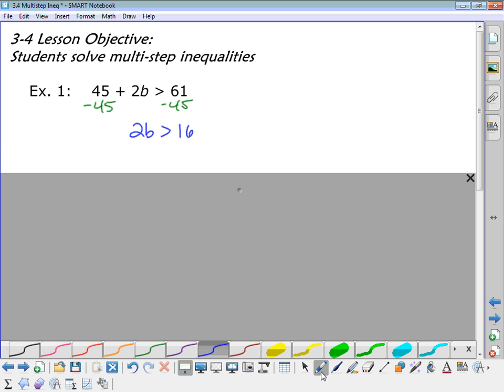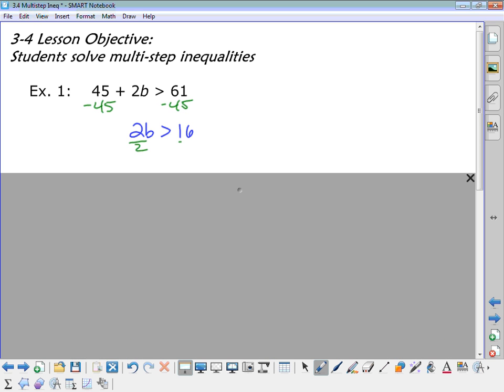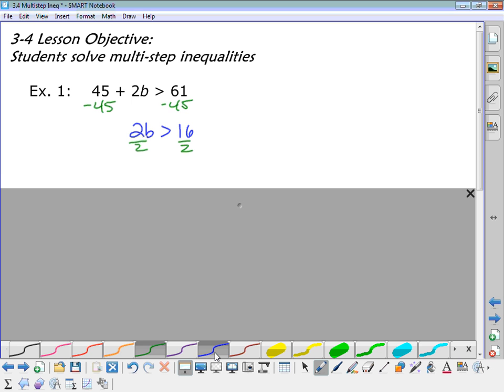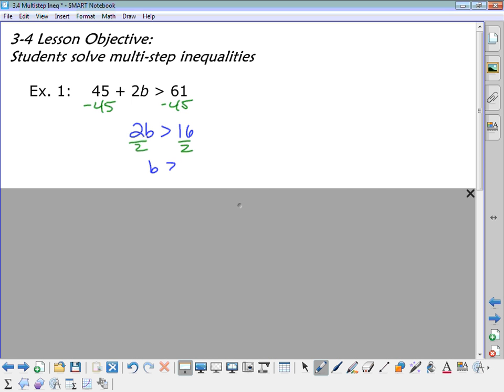The b isn't alone yet though, so what do I need to do? Divide by 2 to get the b alone, because the opposite of multiplication is division. All right, and then we get b is greater than 8.